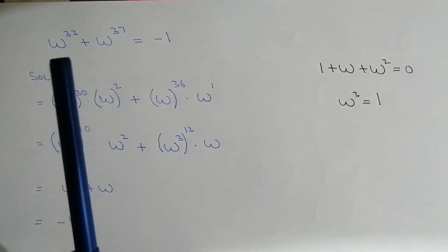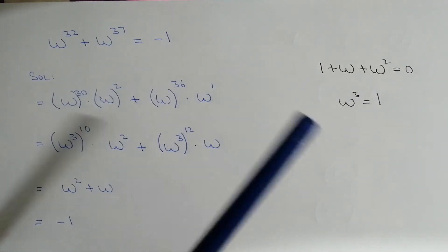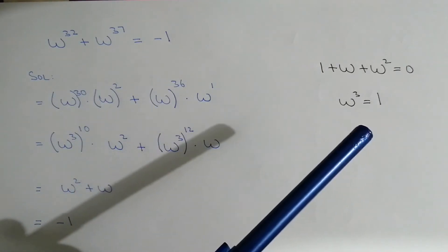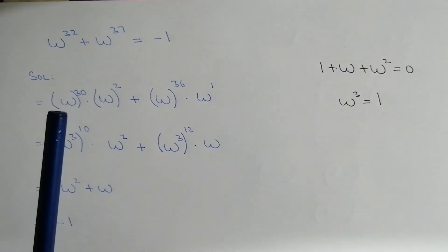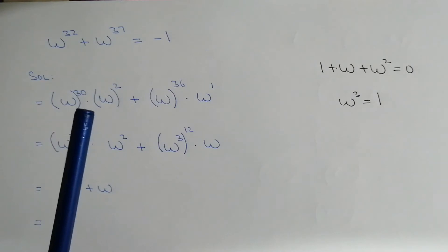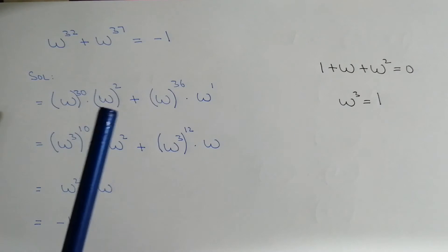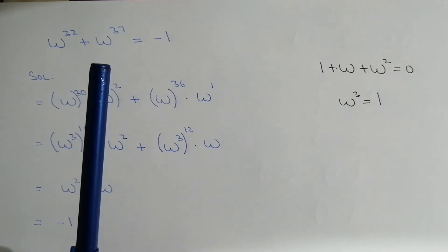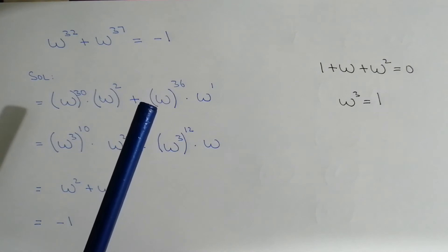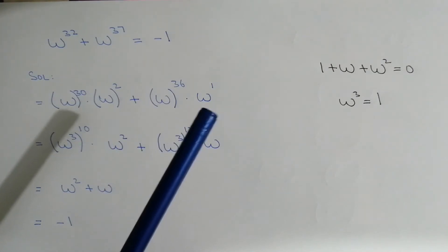Whenever we have a power more than 3, we must break down that power to a multiple of 3, because we know that omega cube is equal to 1. So we can rewrite omega power 32 as omega power 30 into omega square, because when the bases are the same the powers are added. Plus omega power 37 can be written as omega power 36 into omega power 1.